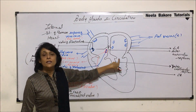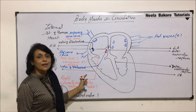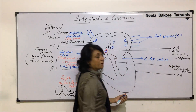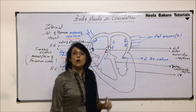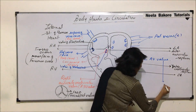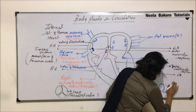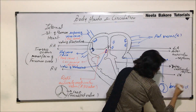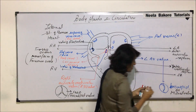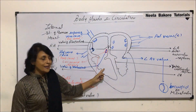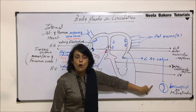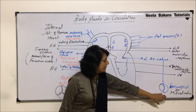The valve which separates the auricle from the ventricle on the right side is the right auriculoventricular valve. On the left side, we call it the left AV valve, or left auriculoventricular valve. This valve is a bicuspid valve — it has only 2 flap-like cusps, unlike the right side which has 3. This bicuspid valve is also known as the mitral valve. So on the right side it is the tricuspid valve, and on the left side it is the bicuspid or mitral valve.